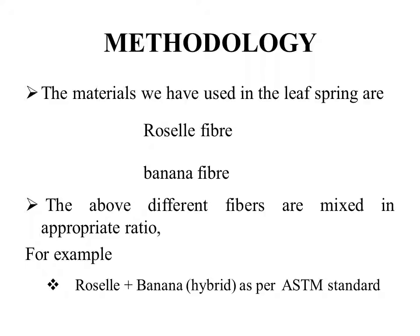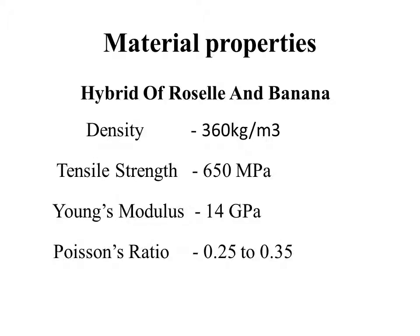The two different fibers are mixed in appropriate ratios of 1:2 and 1:3. For example, Rosal plus banana fiber hybrid, as per ASM standard. The hybrid of natural fiber is a combination of Rosal plus banana fiber hybrid in ASM standard, with approval ratios of 1:2 and 1:3.